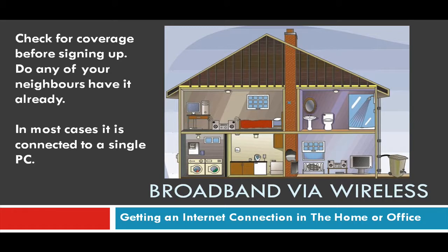Broadband via wireless — before you consider this option, it's worth checking if you've got coverage in your area, perhaps by asking neighbours who already have this type of service. It's typically available in large towns and cities. If you subscribe, the operator will send you out a wireless access unit that can be installed beside your computer. Even if coverage is confirmed, be aware that the materials used in your home or office can block the signal, so try borrowing a unit from someone to test coverage where your computer is located before you sign up.